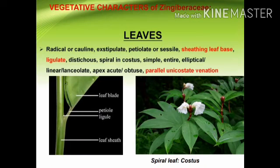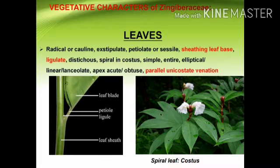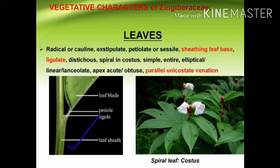The leaves are radical or cauline. Radical means the leaves directly arise from the base of the stem or from the ground — these are called radical leaves. The leaves are exstipulate and also distichous — that is, leaves are arranged alternately, but in distichous arrangement the third leaf is just opposite to the first. The leaves are petiolate or sessile, with sheathing leaf bases, which is an important characteristic of this family.